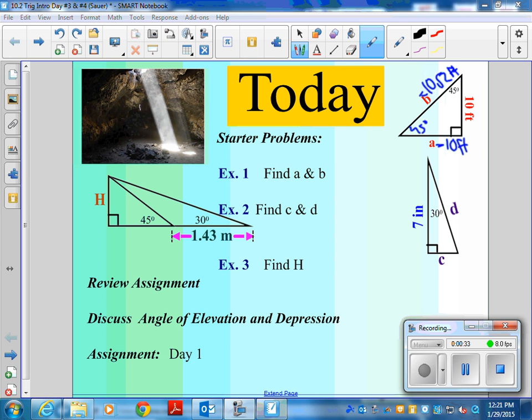This one, now it's a 30, 60, 90 triangle. If this is 7, what will C be? 7 over the square root of 3. And then what will D be? 14 over the square root of 3.